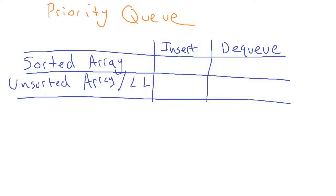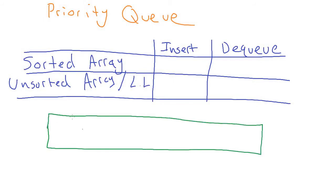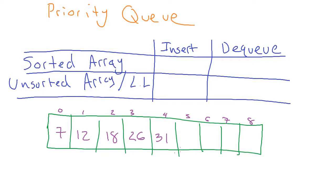Let's start by talking about ways we could solve this priority queue idea using things that we already know. In the priority queue, you want to keep track of data, be able to insert new items, and be able to dequeue the value with the highest priority. One way we can do this is with a sorted array. We can make an array and keep it in sorted order. Some items will be quick to insert — like putting a 45 in the next slot, which keeps the sorted order.